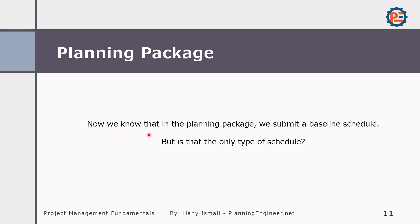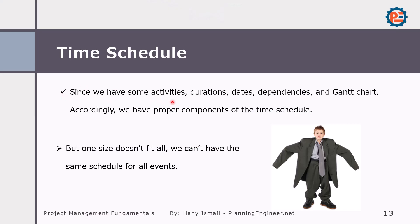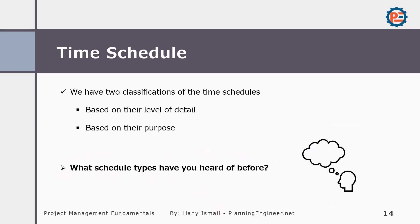Now we know that in the planning package we submit the baseline schedule. But there are different types of time schedules. Since we have activities, duration, dates, dependencies, and Gantt charts, we have proper components of the time schedule. But one size doesn't fit all — we can't have the same schedule for all events. We have two classifications of the time schedule: based on their level of detail, and based on their purpose.